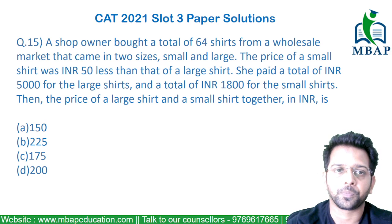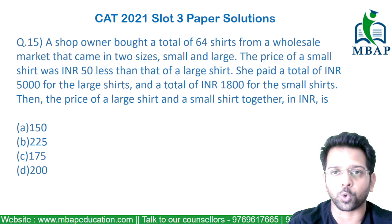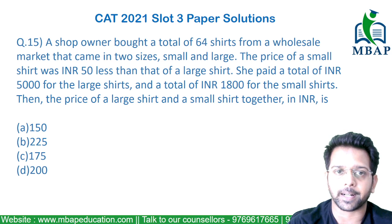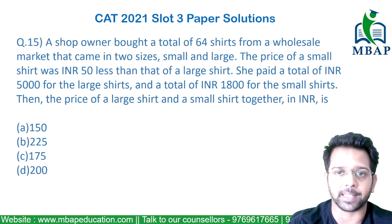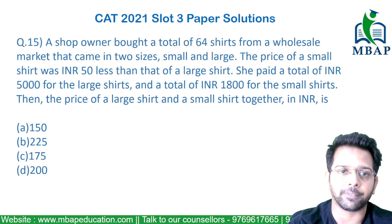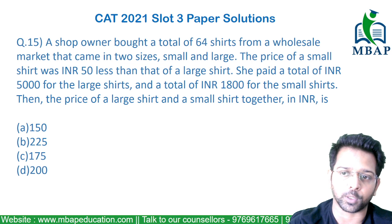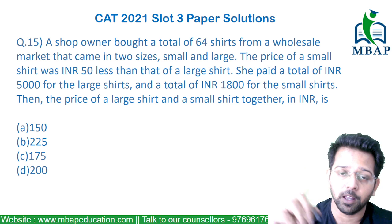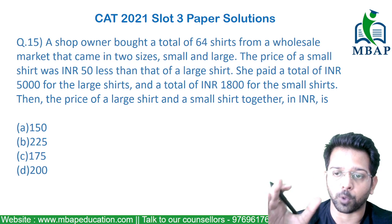Let's have a look at the next question. A shop owner bought a total of 64 shirts from a wholesale market that comes in two sizes, small and large. The price of a small shirt is 50 rupees less than that of the large shirt. She paid a total of 5000 for the large shirts and a total of 1800 for the smaller shirts. The question is: find the combined price — the sum total price of large and small together.